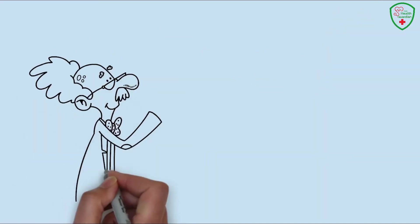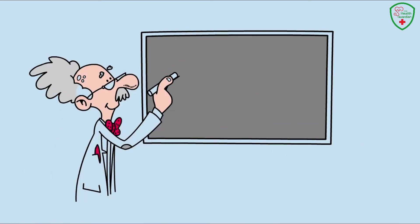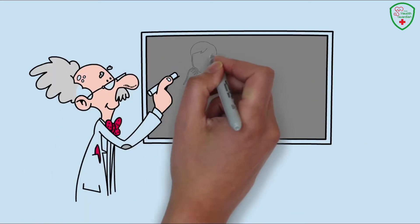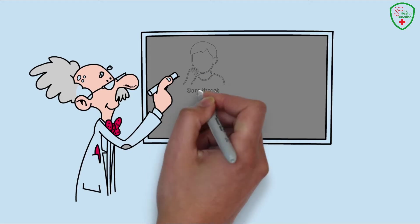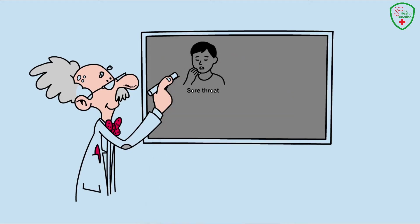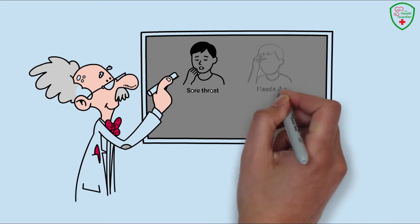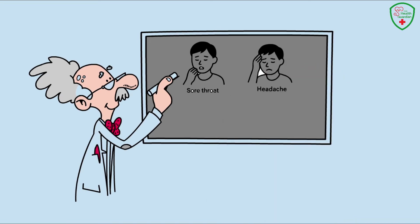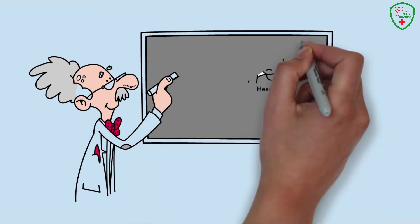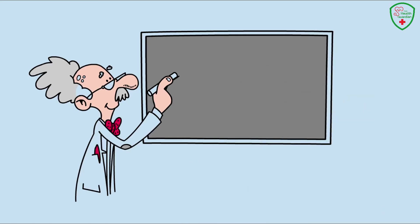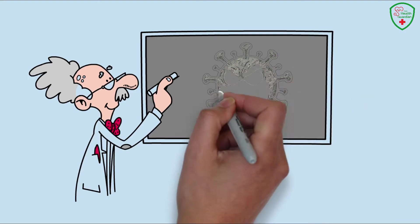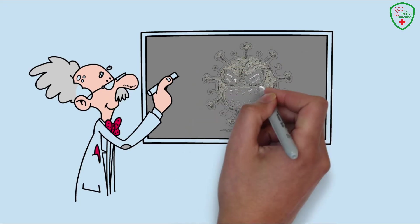These new symptoms are sneaky because they mimic everyday issues, whether you've got KP.2, KP.3, or another strain. That headache? You might blame it on a long day at work. Trouble focusing? Maybe too much screen time or not enough coffee. Vision problems? Could be you need new glasses, right? Wrong. These could be COVID knocking at your door, so don't shrug them off as no big deal.